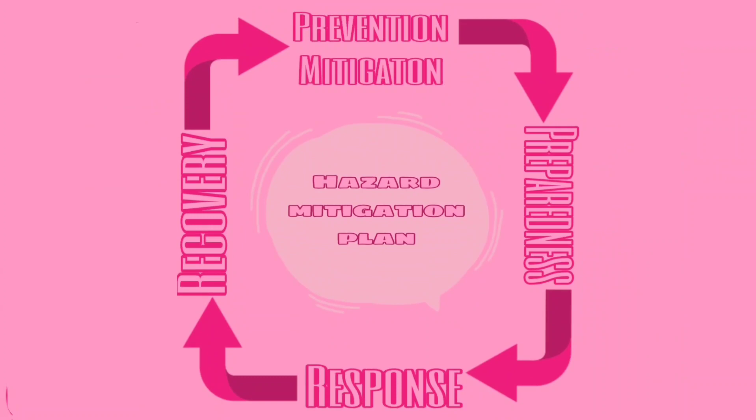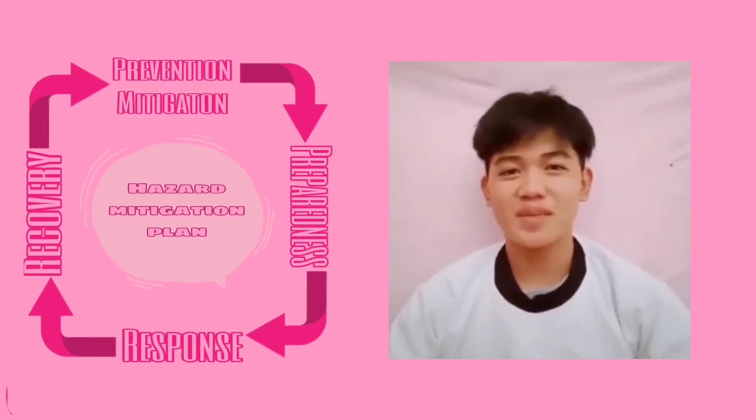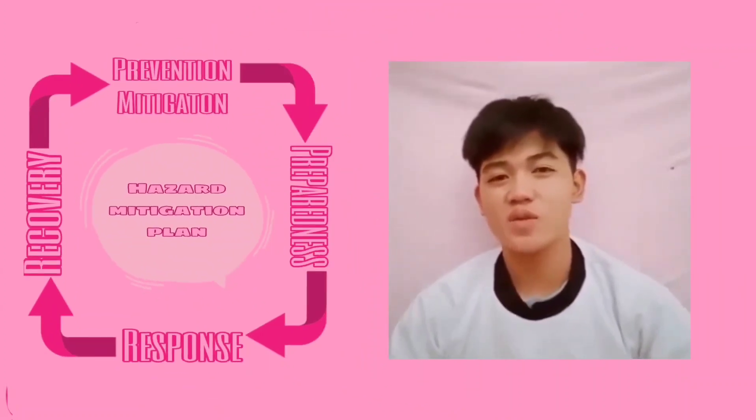I'm going to show you something that we made about Hazard Mitigation. What you're seeing is a visual representation of guidelines on how to do a mitigation plan. The first thing we are going to talk about is prevention and mitigation. Mitigation means to reduce the severity of human and material damage caused by a disaster, while prevention is to ensure that human action or natural phenomena do not result in disaster.